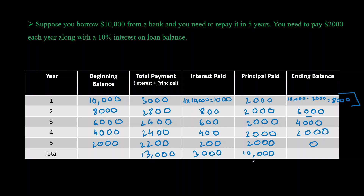This is what our final amortization schedule looks like. In total, we are paying ten thousand dollars in principal, which is exactly the amount we owed the lender. Additionally, we pay ten percent interest every year on the beginning balance, which amounts to three thousand dollars in total interest. So the total payment we are making is thirteen thousand dollars. Now you know what loan amortization is and how to prepare an amortization schedule for a fixed principal payment with a fixed interest rate.